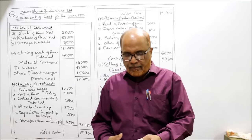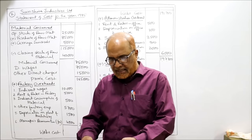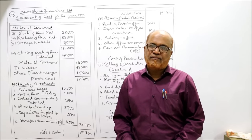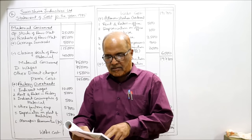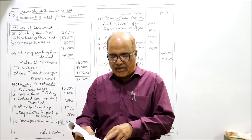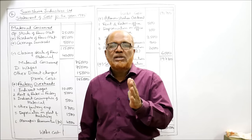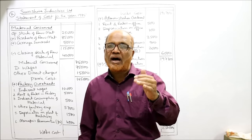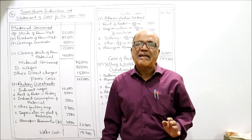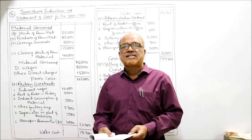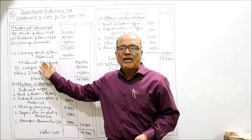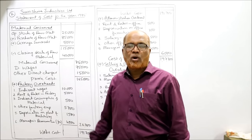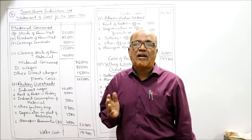Now we'll start the second main problem. The following data has been extracted from the books of Sunshine Industries Limited for the year 1985. Given: opening stock of raw material 25,000; purchase of raw material 85,000; closing stock of raw material 40,000; carriage inward 5,000. Using these we find material consumed: opening stock plus purchases plus carriage inward minus closing stock. Direct wages will be part of prime cost. Indirect wages — new point — should be taken under factory overhead.